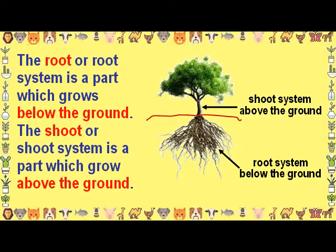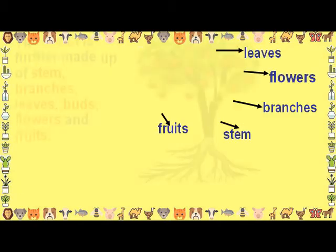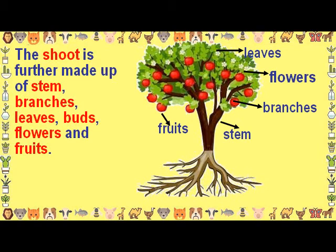The root is a part which grows below the ground. The shoot is a part which grows above the ground. The shoot is further made up of stem, branches, leaves, buds, flowers, and fruits.